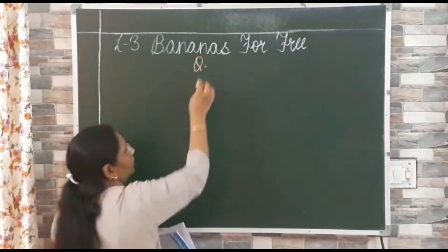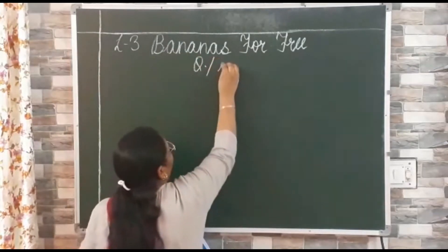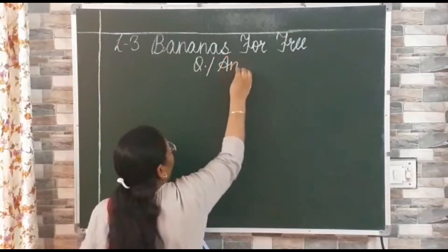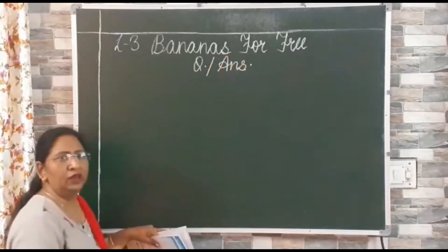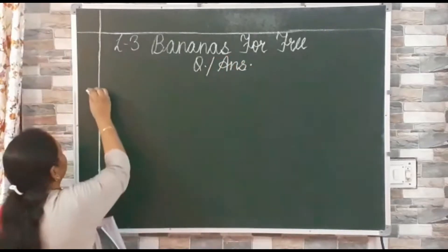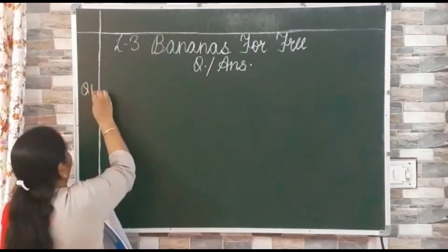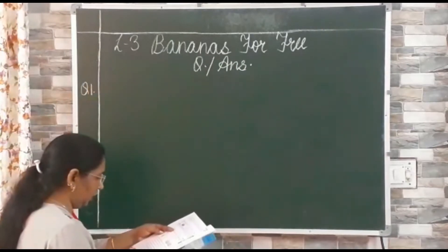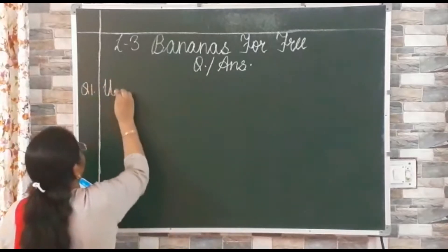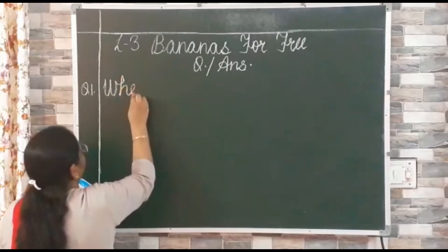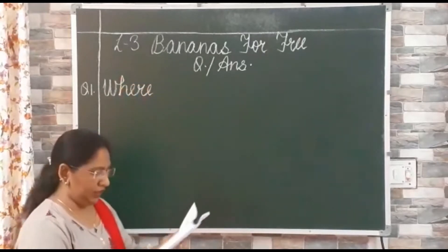Q dot — that is for question — slash and Ans dot — that is for answer. Again put a dot. Question, answer. Now from the next line, write down question number 1. And question number 1 is: 'Where does' — see, the first letter should be capital. Why? Because we always start a new sentence with a capital letter.